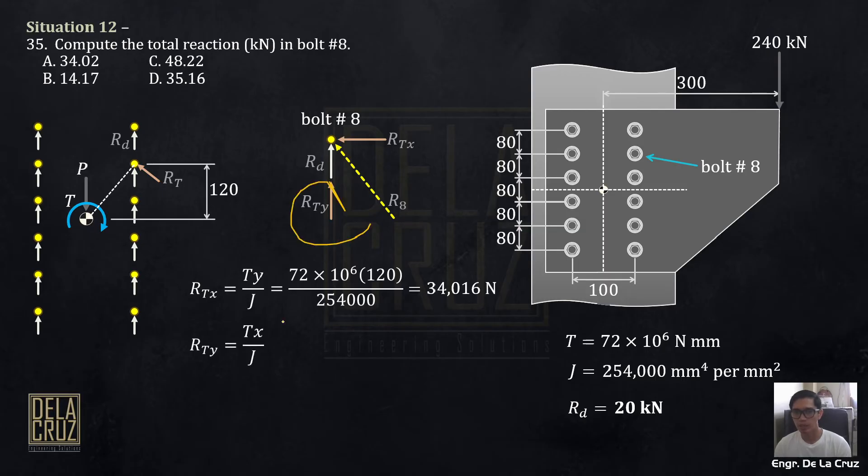And RTY, this one, is TX. This is our X. Why X? Because, this is our TY, RTY, its moment arm about the centroid is X. Okay? So, that's 50. Half of 100. So, T times 50 over polar moment of inertia.